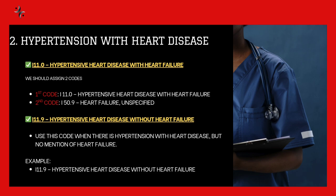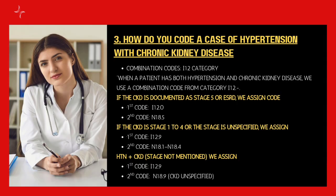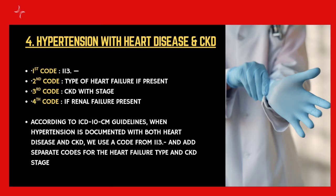The third guideline: how do you code a case of hypertension with CKD? If a patient has hypertension with CKD, we give a combination code I12 point dash. The dash indicates whether the stage is specified or not. If CKD is documented as stage 5 or ESRD, you should assign I12 first.